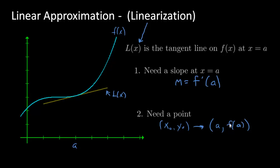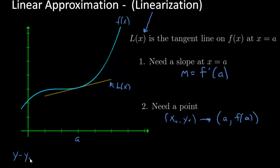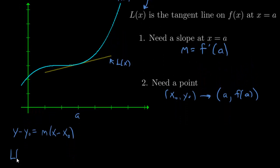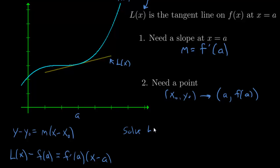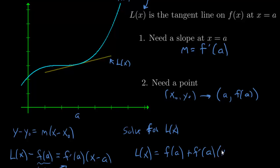So I have a point, I have the slope. Now I can use the point-slope formula. You've probably seen it written like this: y minus y₀ equals M times x minus x₀. But now we're going to use the notation we introduced — f prime of a and this point. So instead we write L of x minus f of a equals f prime of a times (x minus a). Now all we're going to do is solve for L of x by adding f of a to both sides, giving us L of x equals f of a plus f prime of a times (x minus a). And this right here is my linearization, or my linear approximation.